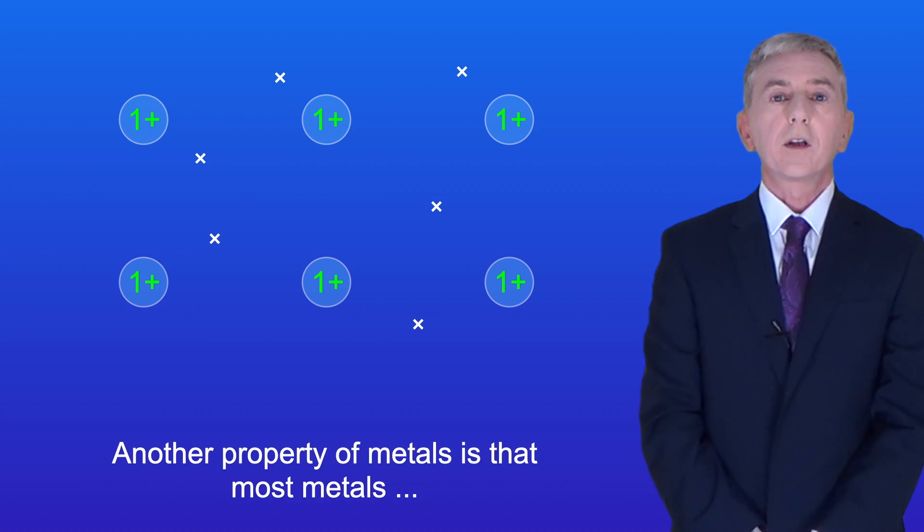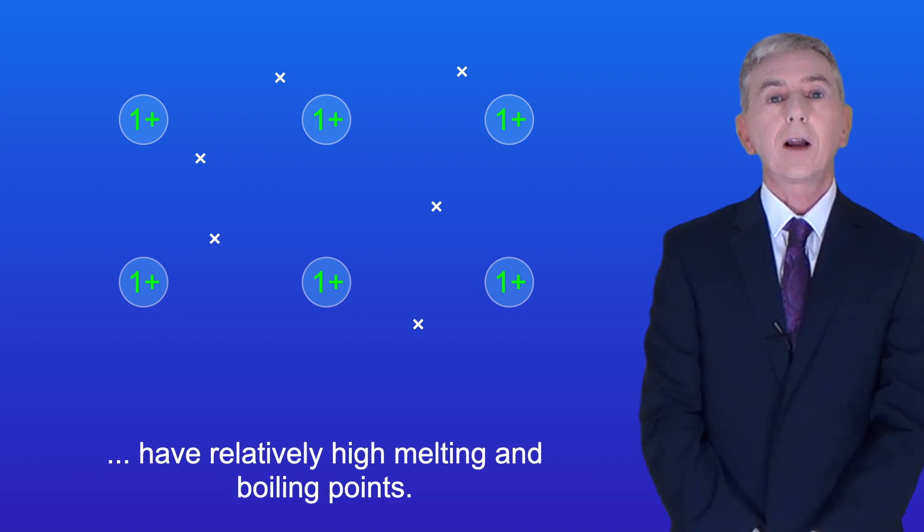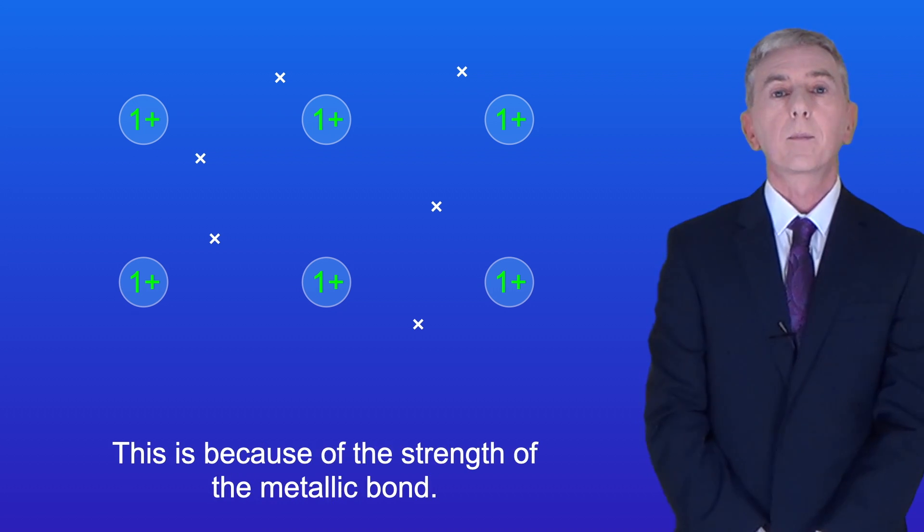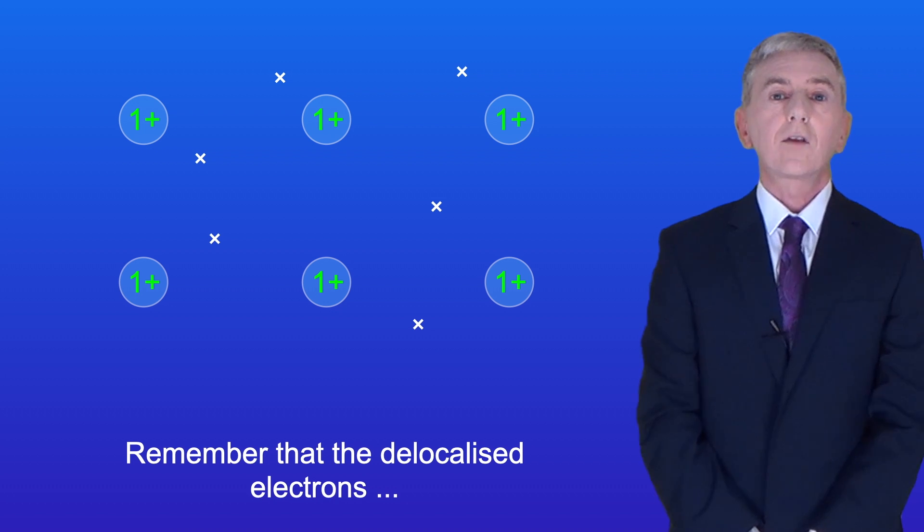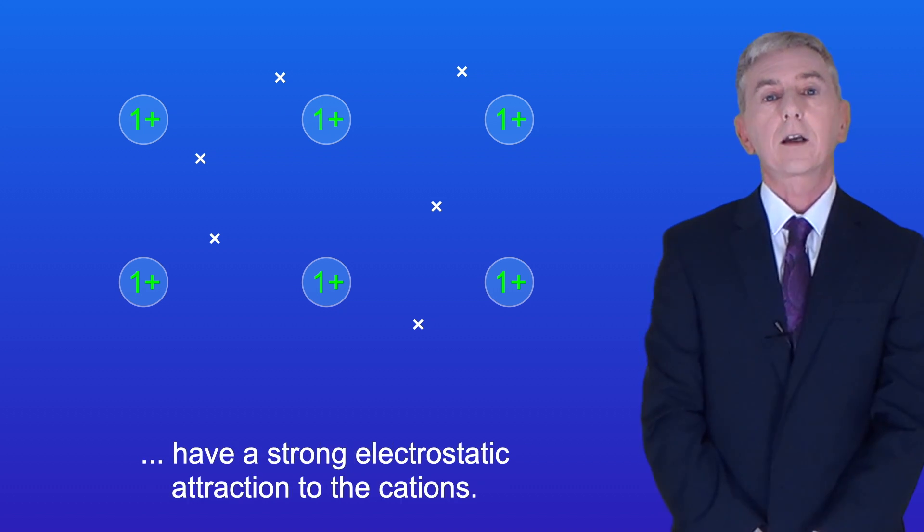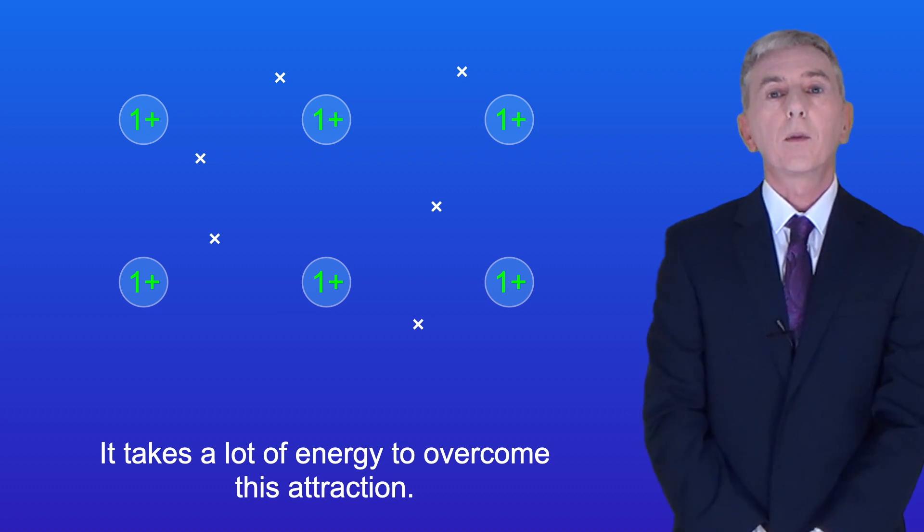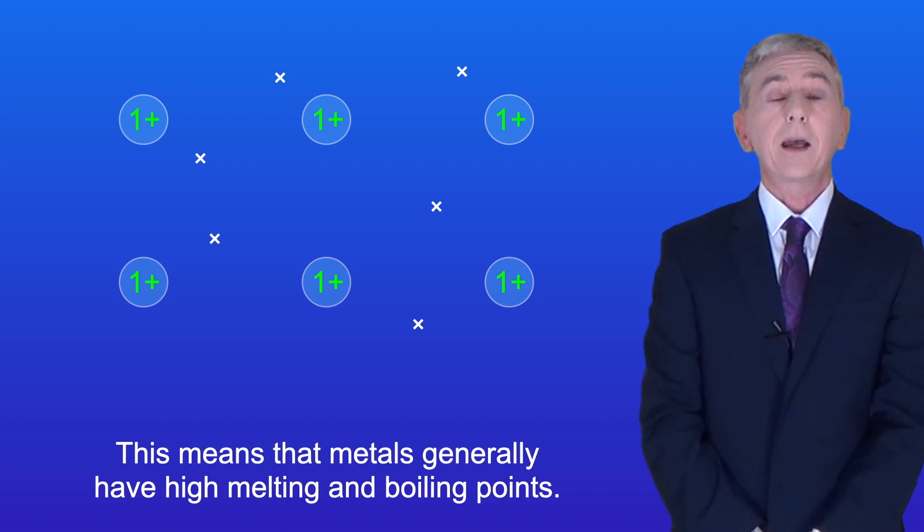Now another property of metals is that most metals have relatively high melting and boiling points and this is because of the strength of the metallic bond. Remember that the delocalized electrons have a strong electrostatic attraction to the cations. It takes a lot of energy to overcome this attraction and this means that metals generally have high melting and boiling points.